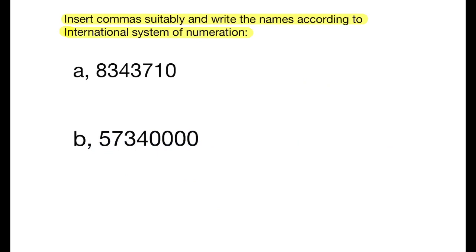Let us do a few more examples. Insert commas suitably and write the names according to the international system of numeration. First number: 8,343,710. In this number, we insert the first comma after three digits from the right, that is after the hundreds place.